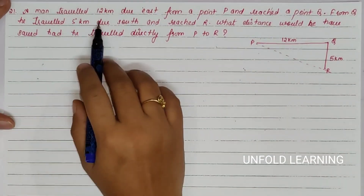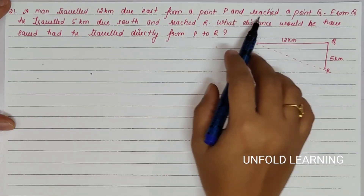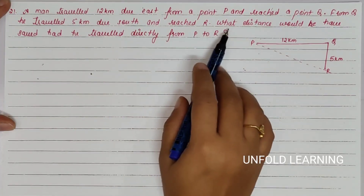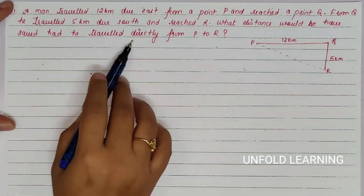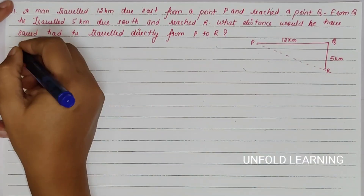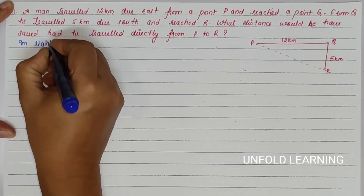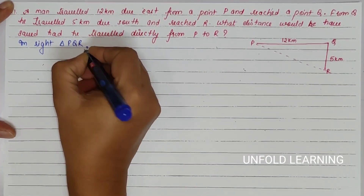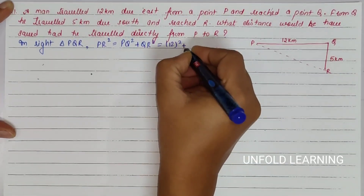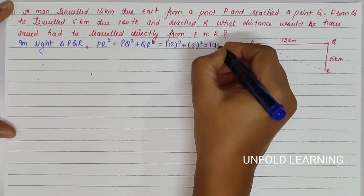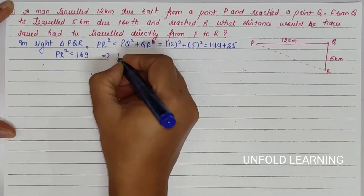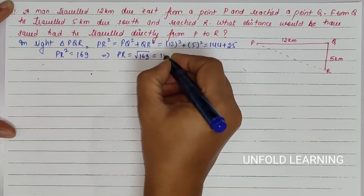Question Number 21. A man travelled 12 km due east from a point P and reaches a point Q. From Q he travels 5 km due south and reaches R. What distance would he have saved had he travelled directly from P to R? In right triangle PQR, PR square is equal to PQ square plus QR square. This is 12 squared plus 5 squared, which is 144 plus 25. So PR square will be equal to 169. Therefore PR is the square root of 169, that is 13 km.